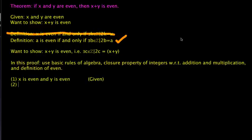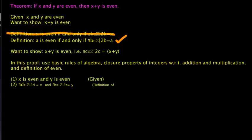Applying the definition to x, we need to use a different letter. Because x is even, there exists a d, which is an integer, such that 2d is equal to x. And again using another letter, there exists an e, which is an element of ℤ, such that 2e is equal to y. Our justification for that step is the definition of even.